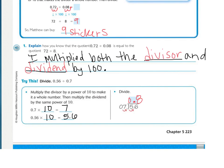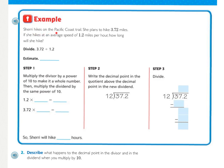Turn your page over. Example. Sherry hikes on the Pacific Coast Trail. She plans to hike 3.72 miles. If she hikes at an average speed of 1.2 miles per hour, how long will she hike? Underline what you're being asked to find and circle the important numbers. You should have underlined how long will she hike, circled 3.72 miles, and then 1.2 miles per hour. In green, I underlined the word average because that is a clue word for division. So, you're going to be dividing the total number of miles that Sherry is going to hike divided by how quickly she can hike. So, that's 3.72 divided by 1.2.